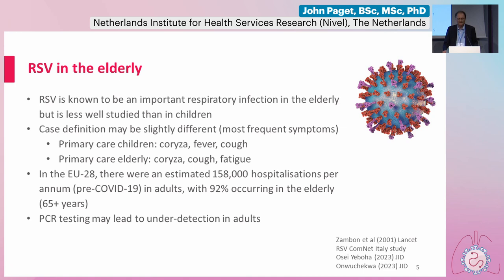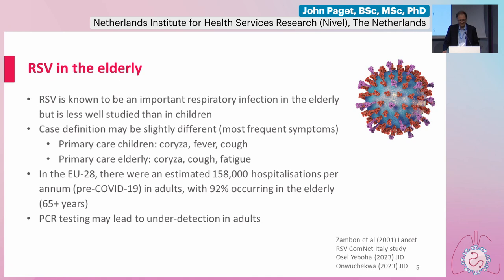In terms of RSV in the elderly, it was not so well understood, but we're getting there, and it's turning out to be an important respiratory infection in the elderly. One of the first studies to show that was a paper by Maria Zambon in The Lancet, where they looked at surveillance data and positive cases across different age groups. Somehow to everybody's surprise, they found a lot of RSV in the ILI cases in the elderly. There are challenges assessing the burden of RSV in the elderly, one of which is the case definition. The main symptoms differ for children under five and the elderly — I'll come back to this study.